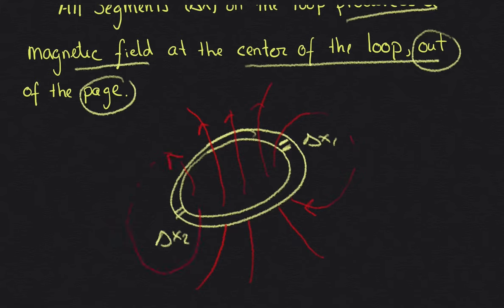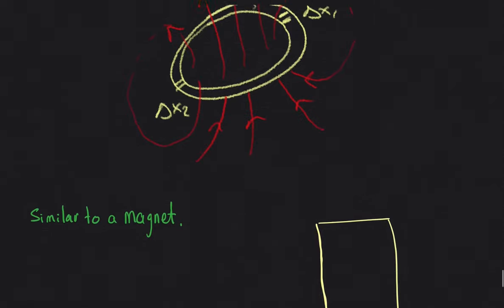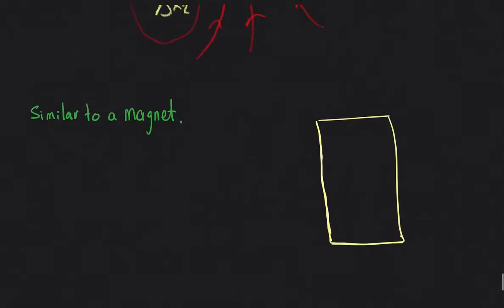The field lines from the loop look like a magnet — and that's the whole point. This drawing is similar to a magnet where the north is at the top and south at the bottom, with field lines going away from north and toward south. That's why we call a solenoid an electromagnet.